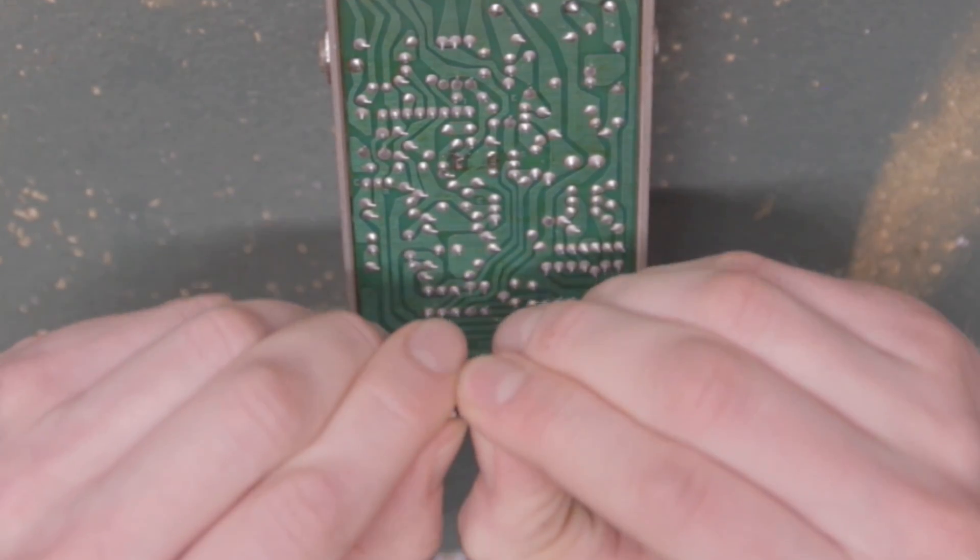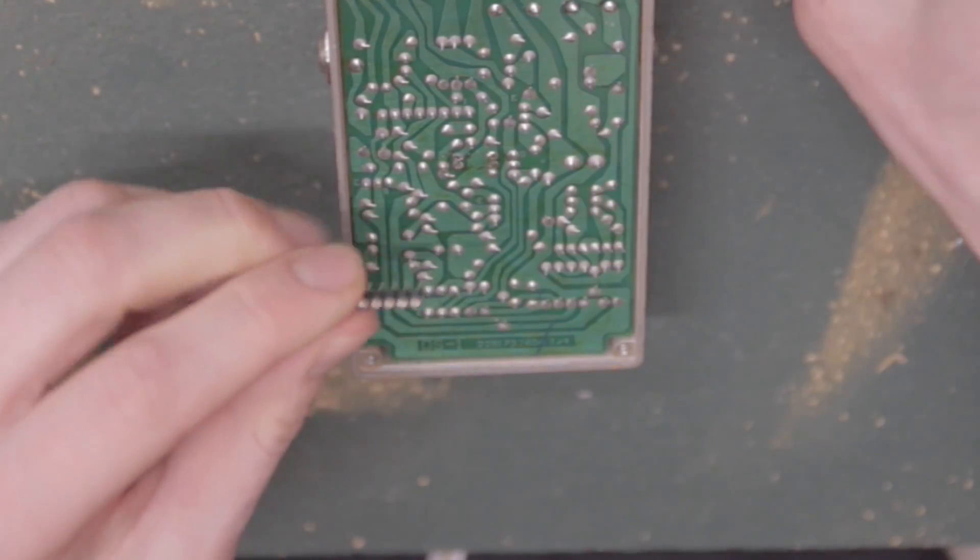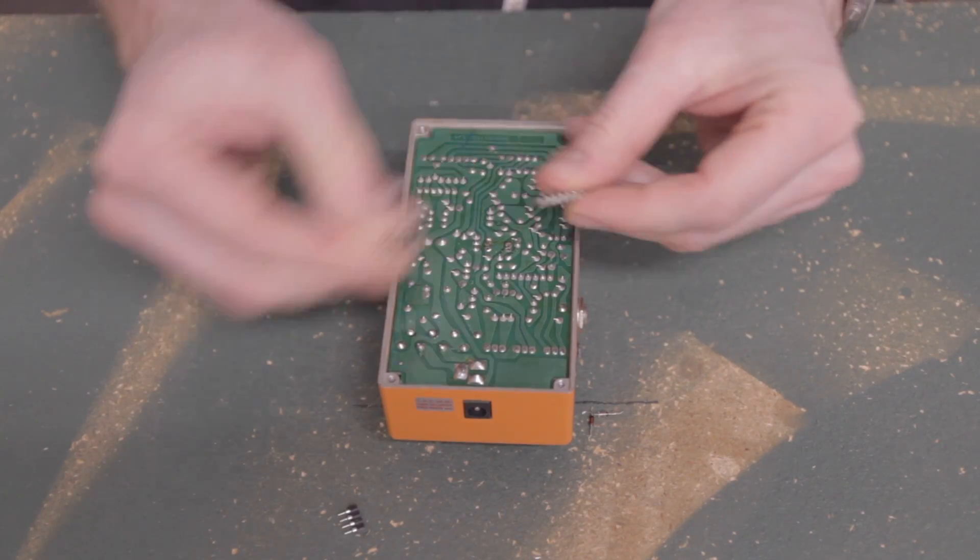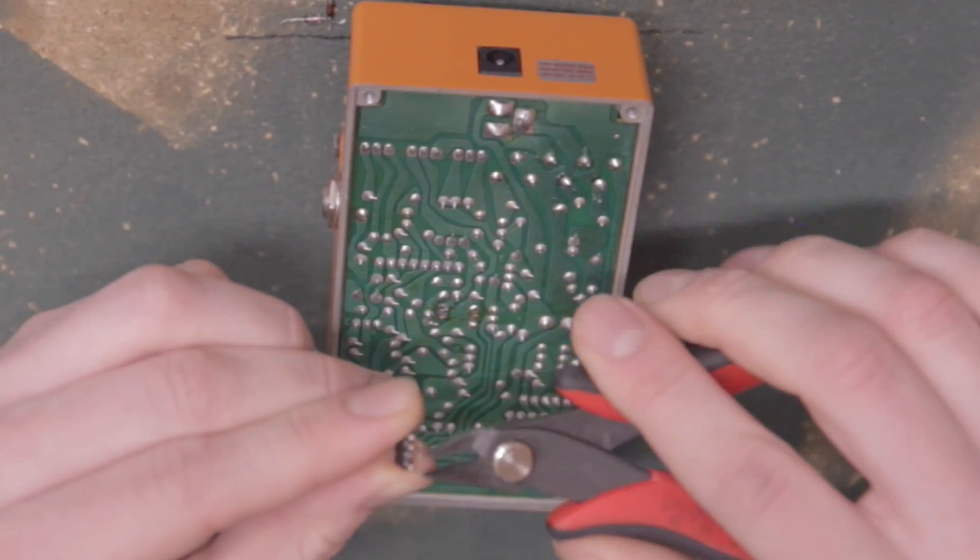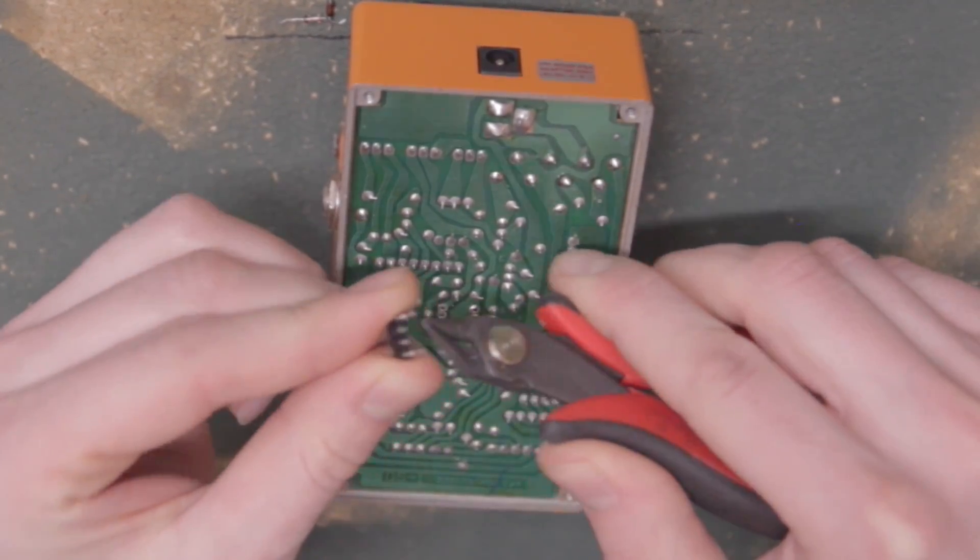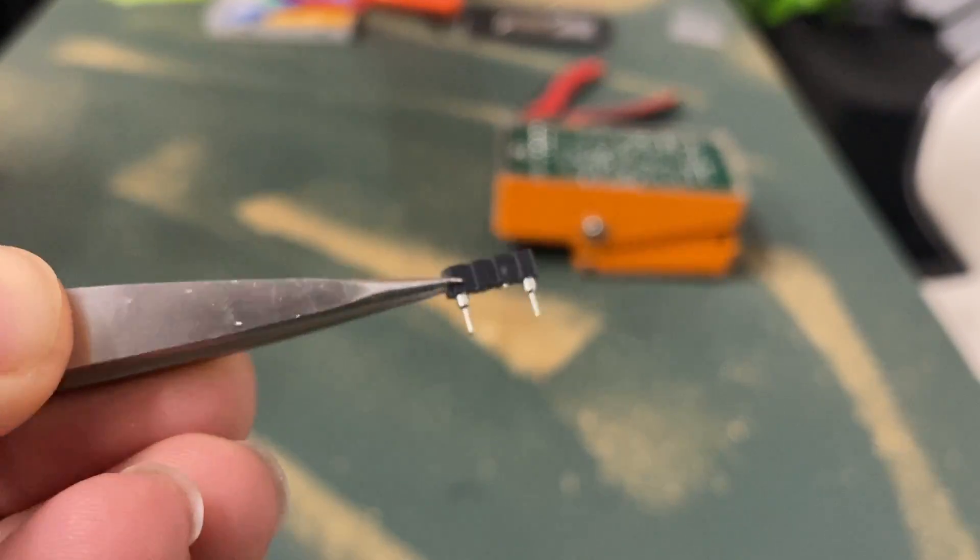Take your component socket and snap it so you have two strips that are four component spaces long. Now, snip off as much of the leg as you can for the two middle positions of each strip of the sockets, like this.